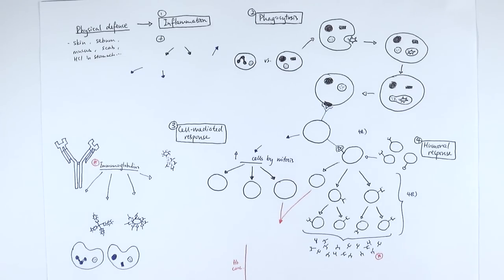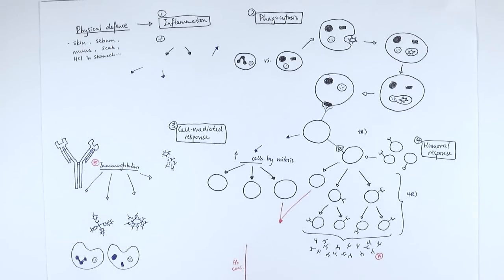The immune response is like a story and it has four different parts. We've got inflammation as the first step, then phagocytosis, then the specific ones — cell-mediated and humoral responses. And obviously we've got the aftermath, which is about how we stop the whole immune response.